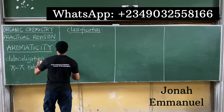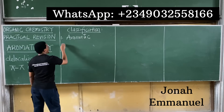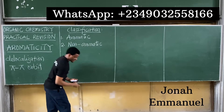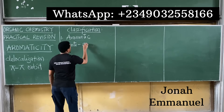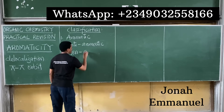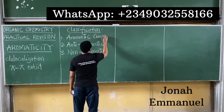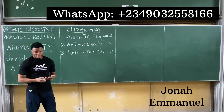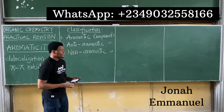Classification under aromaticity: compounds are classified as either aromatic, anti-aromatic, or non-aromatic. They will give you a series of cyclic compounds and ask you to classify them. Let's start with the conditions for each category.